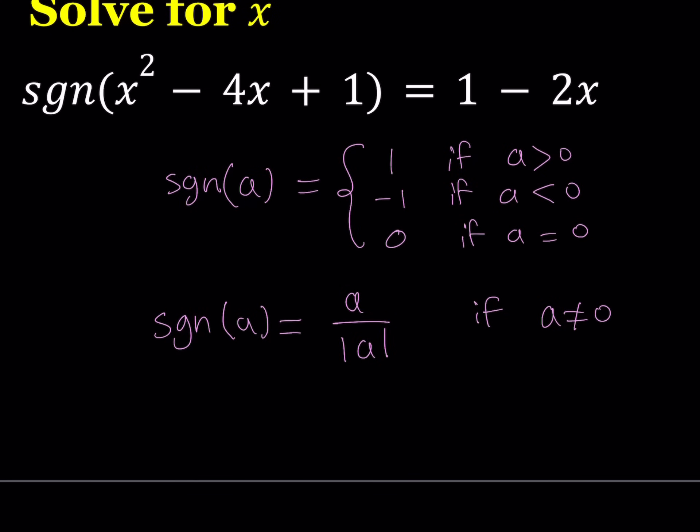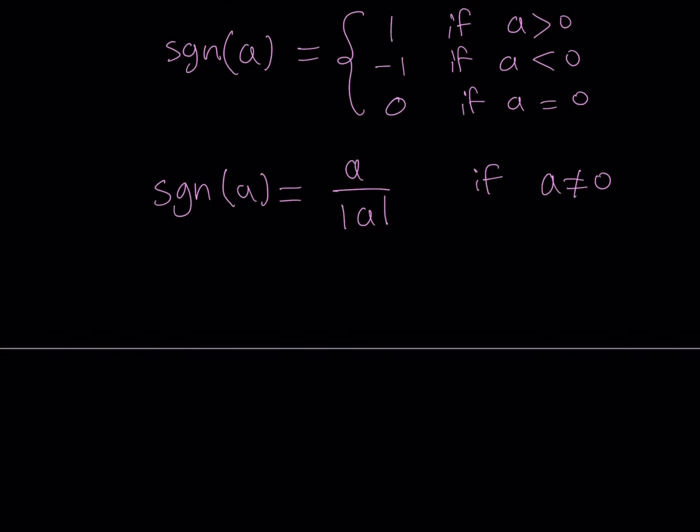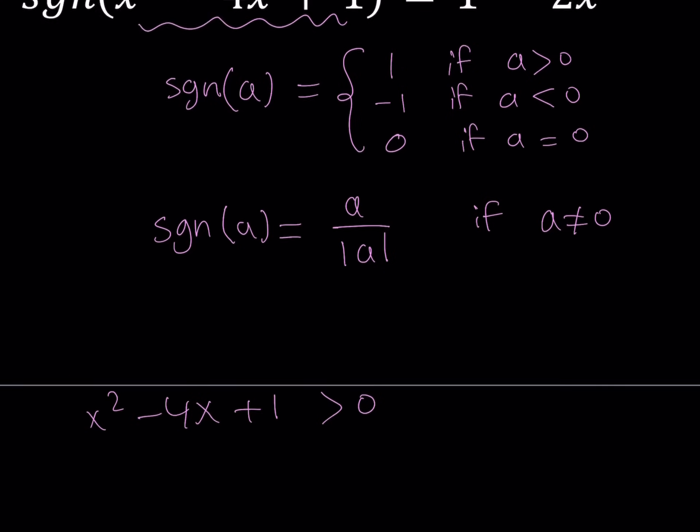So how do you solve these kinds of equations? You're going to look at three different cases. So what are they? I'm going to be checking this expression right here, x squared minus 4x plus 1. That is my expression, and I want it to be positive first. When is this positive? And what happens if it's positive? Let's go ahead and take a look.